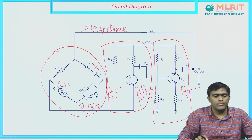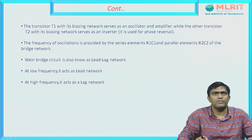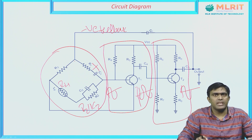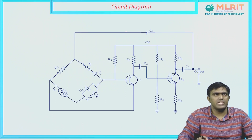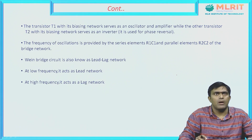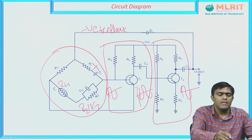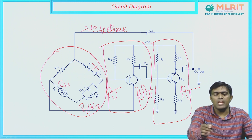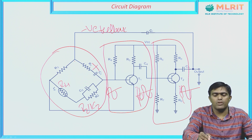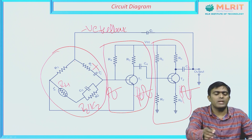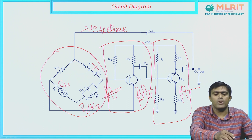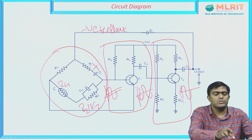Transistor T1 with its biasing network acts as an oscillator and amplifier, while transistor T2 with its biasing network acts as an inverter. The output of transistor T1 is inverted by T2. When we compare the output of T1 and the output of T2, both are out of phase — a 180 degree phase shift. But compared to the input of transistor T1, the output of T2 is the same, meaning they are in phase. Therefore, the total phase shift of T1 and T2 together is 360 degrees.